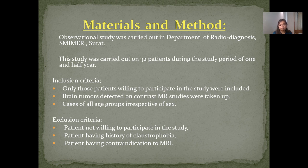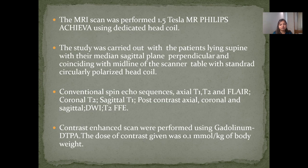Exclusion criteria: patients not willing to participate, patients with a history of claustrophobia, and patients with contraindications to MRI. The MRI scan was performed on a 1.5 Tesla MR Philips Achieva with a dedicated head coil. Conventional spin-echo sequences included axial T1, T2, and FLAIR, coronal T2, sagittal T1, post-contrast axial, coronal and sagittal, diffusion-weighted imaging, and GRE. Contrast scan was performed using gadolinium DTPA.